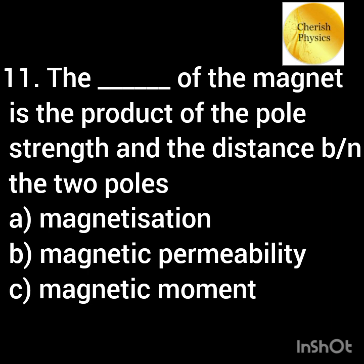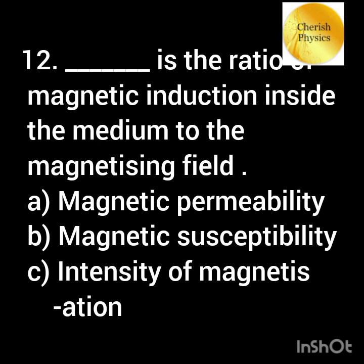The magnetic moment of a magnet is the product of the pole strength and the distance between the two poles. The ratio of magnetic induction inside the medium to the magnetizing field is —